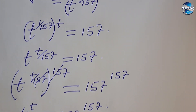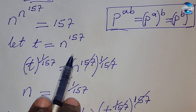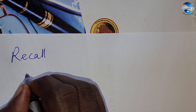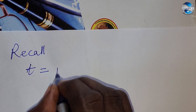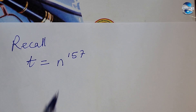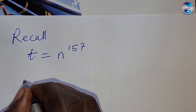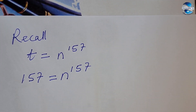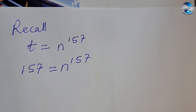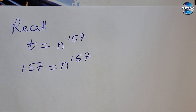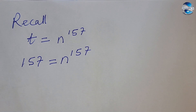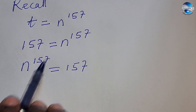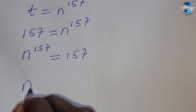We don't have t in our original system, so we go back to where we said let t equal n to the power of 157. Recall that t = n^157. We solved t to be 157, so substituting gives us 157 = n to the power of 157. To isolate n, we raise both sides to the power of one over 157.